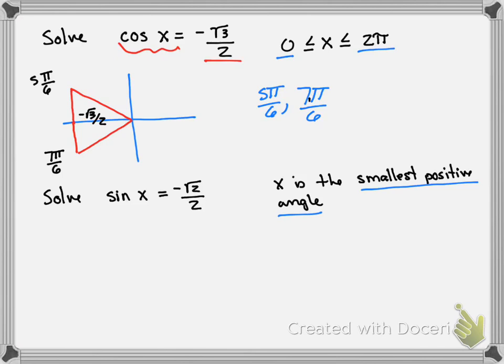For the second question, you're asked for the smallest positive angle. So that's only going to be one angle. In this case, sine of x is looking for the y. And we want that y to be negative square root of 2 over 2.